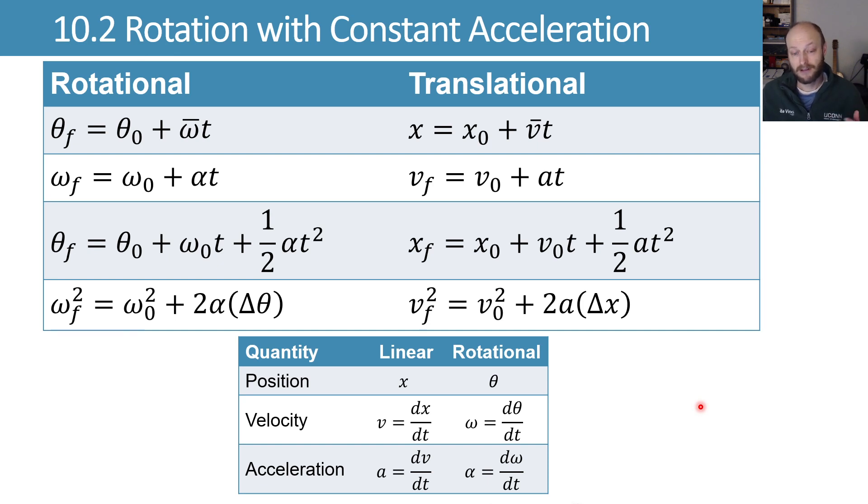With these, we can now consider similar situations that we considered with translational motion, now with rotational motion. I'll label these 1, 2, 3, 4 in case that helps think through which one we're going to use. And as before, when we solve problems using these, we're going to write down the things we know, the things we're trying to find, and then try and find one of these that relates the things we know to what we're trying to find in the easiest, most straightforward way.